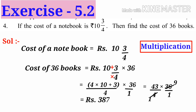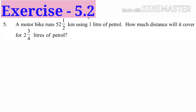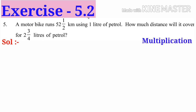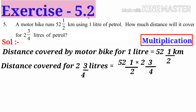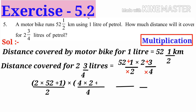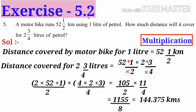Fifth problem: a motorbike runs 52 and a half kilometers using 1 liter of petrol. How much distance will it cover for 2 and 3/4 liters of petrol? Observe that liters are increased, so the operation is multiplication. Distance for 1 liter is 52½ km, so distance for 2¾ liters is 52½ × 2¾. Convert both mixed fractions to improper fractions: 105/2 × 11/4 = 1155/8 = 144.375 kilometers.